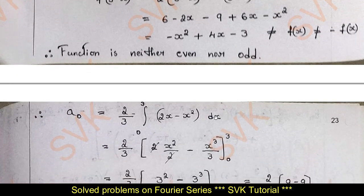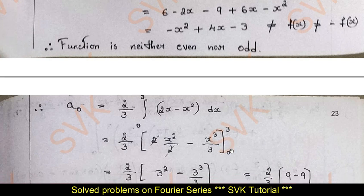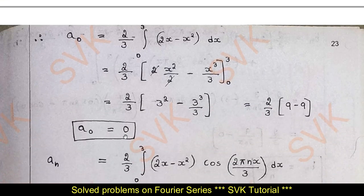We are going to find a₀, aₙ, and bₙ. a₀ is given by (2/3) · ∫₀³ (2x − x²) dx. Integrating: the integral of 2x is x², and of x² is x³/3. Substituting the limits 0 to 3, we get a₀ = 0, and therefore a₀/2 = 0.